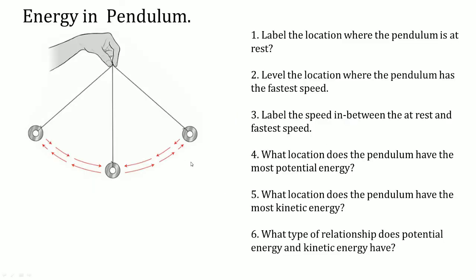The first scenario we're going to talk about is the energy in a pendulum. These are typical questions you will see regarding energy in the pendulum. First, you want to label the location where the pendulum is at rest. There are two locations where the pendulum is going to be at rest — at rest there and at rest there — because the object cannot go further right or further left.